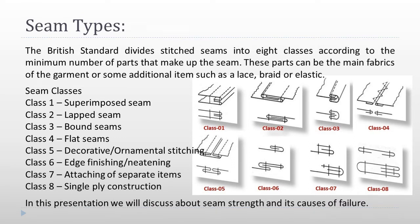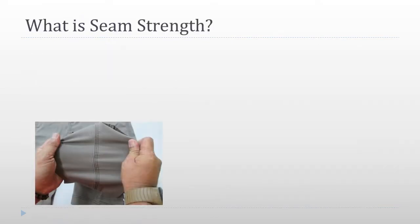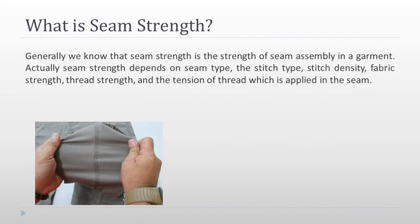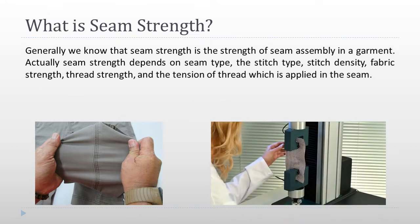In this presentation we will discuss about seam strength and its causes of failure. What is seam strength? Generally, seam strength is the strength of the seam assembly in a garment. Actual seam strength depends on seam type, the stitch type, stitch density, fabric strength, thread strength, and the tension of thread which is applied in the seam.